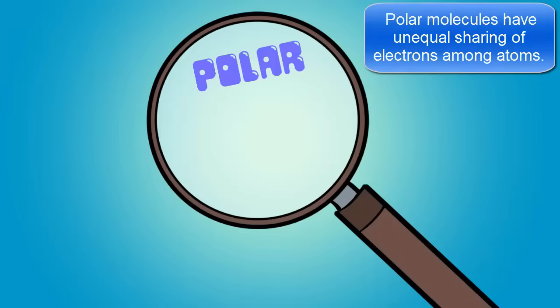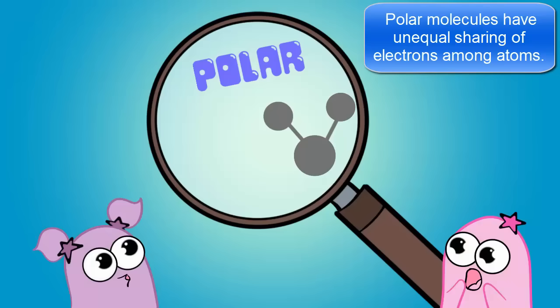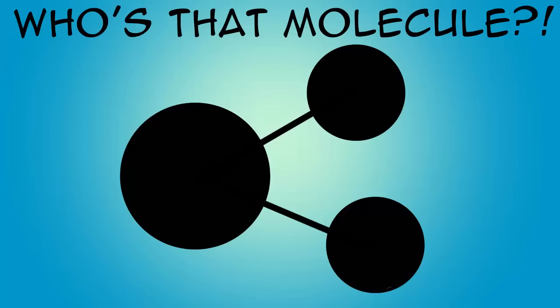It's polar, it's shaped like an outstretched V, its properties are awesome, and it makes up three-fourths of the surface of the earth. That one always gives it away.